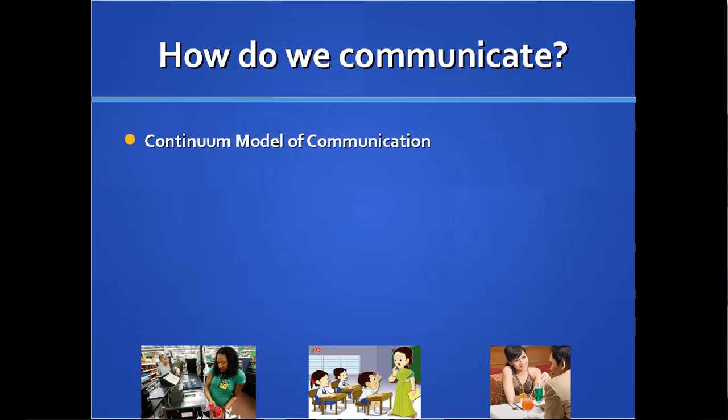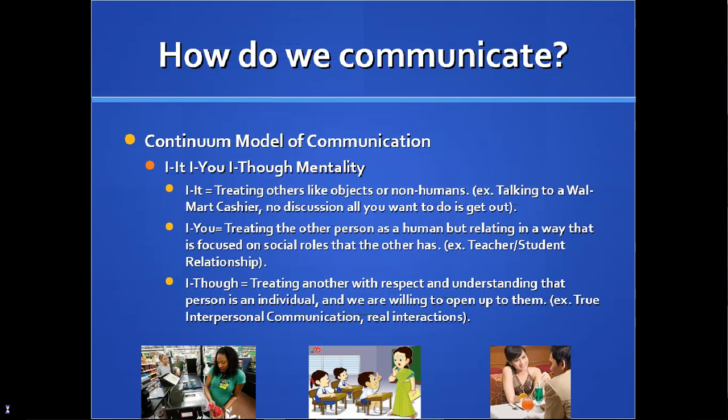That brings us to the last model, which is the continuum model of communication, used a lot in interpersonal communication — the idea of I-it, I-you, and I-thou. First, I-it means treating other people like objects or non-humans, basically like talking to a Walmart cashier. The only thing is about the transaction — you treat the other person as if they're an object, just a way for you to get what you need.